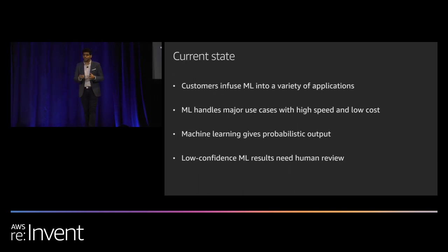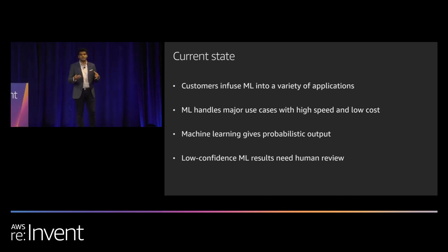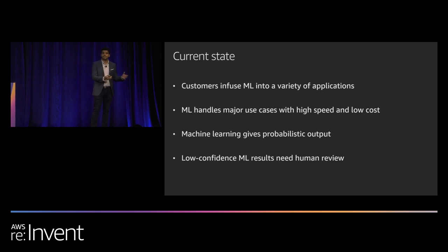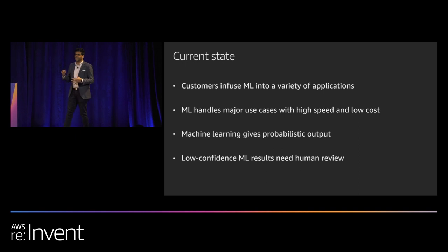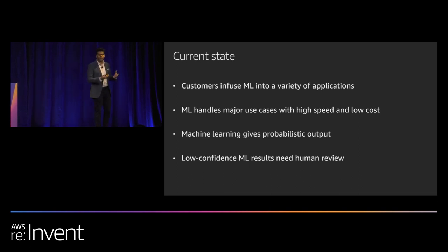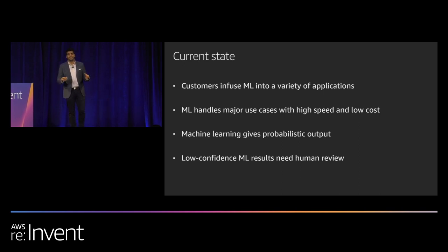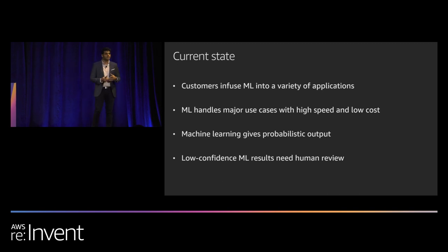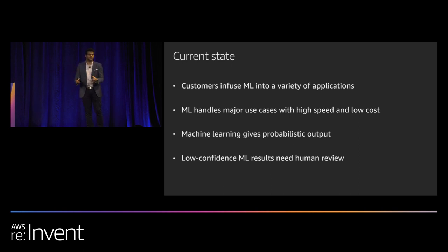What is machine learning? Machine learning is a set of algorithms that can learn by example. If you give an algorithm 1,000 images telling it what is a dog versus a cat, the algorithm can then learn to predict on a new image whether a dog or cat is present. Customers are infusing machine learning in many applications because it handles use cases with high speed and low cost. But inherently, machine learning gives a probabilistic output — it might say it's 80% confident a dog is present, or only 50% confident. Low confidence results still need human review.